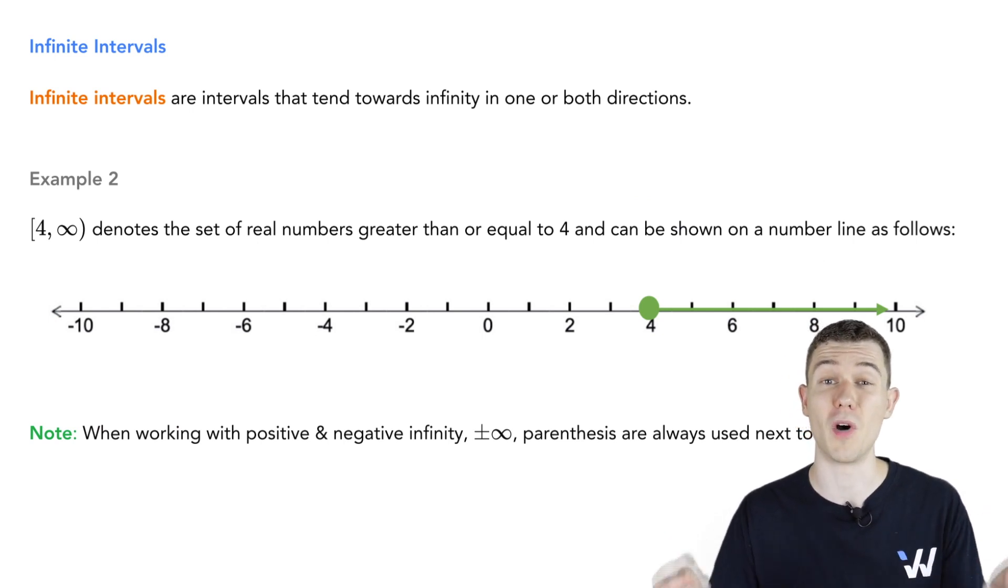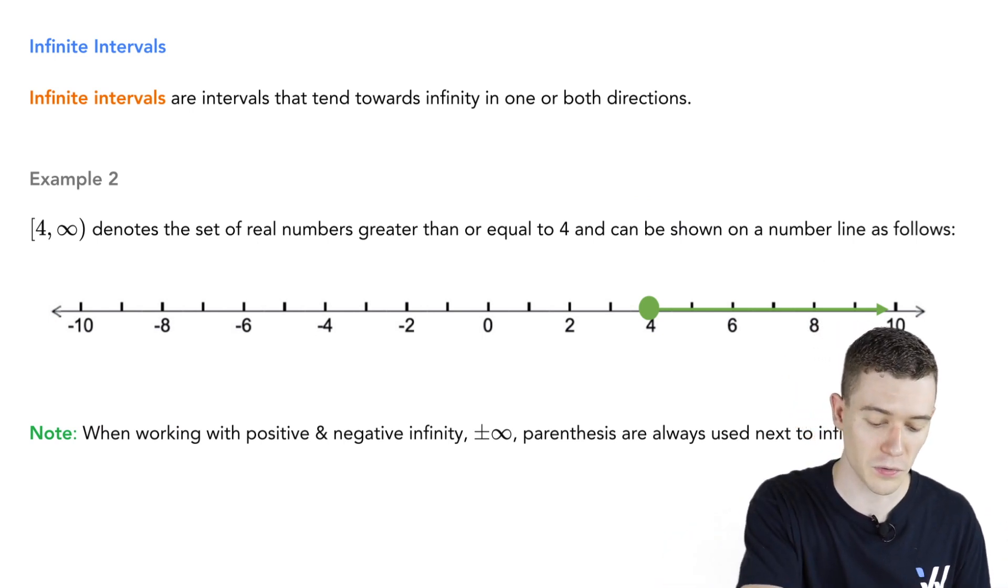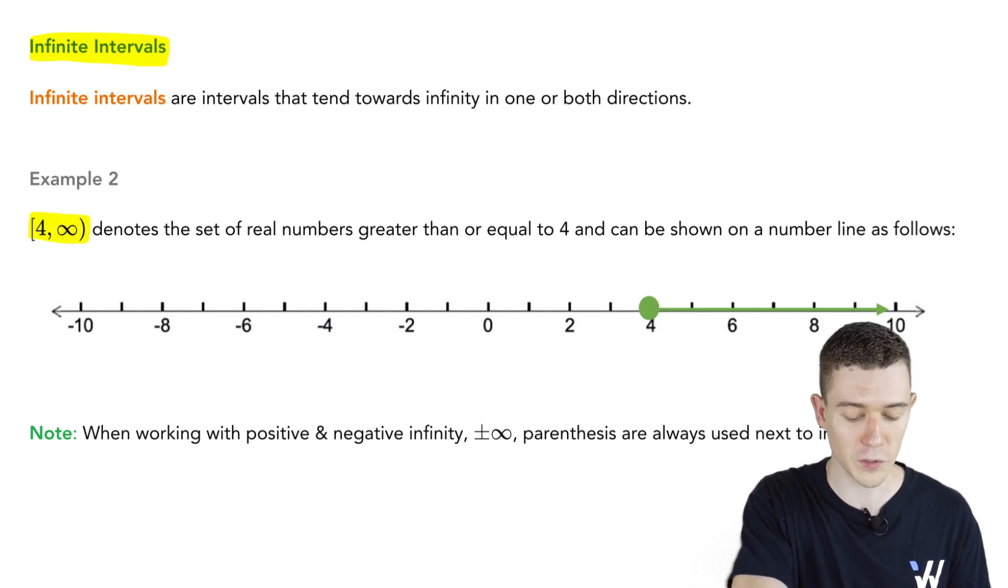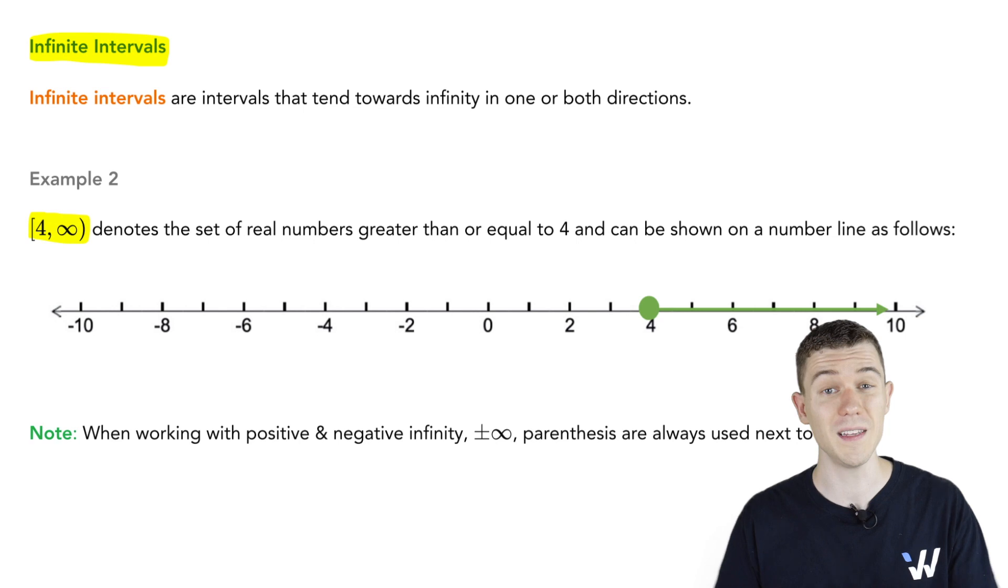We can even have intervals that go on forever. Such intervals are called infinite intervals. And they're written like this, something like 4 to infinity. So what this means is all the numbers from 4 up forever, including 4. Now, we can't really include infinity.